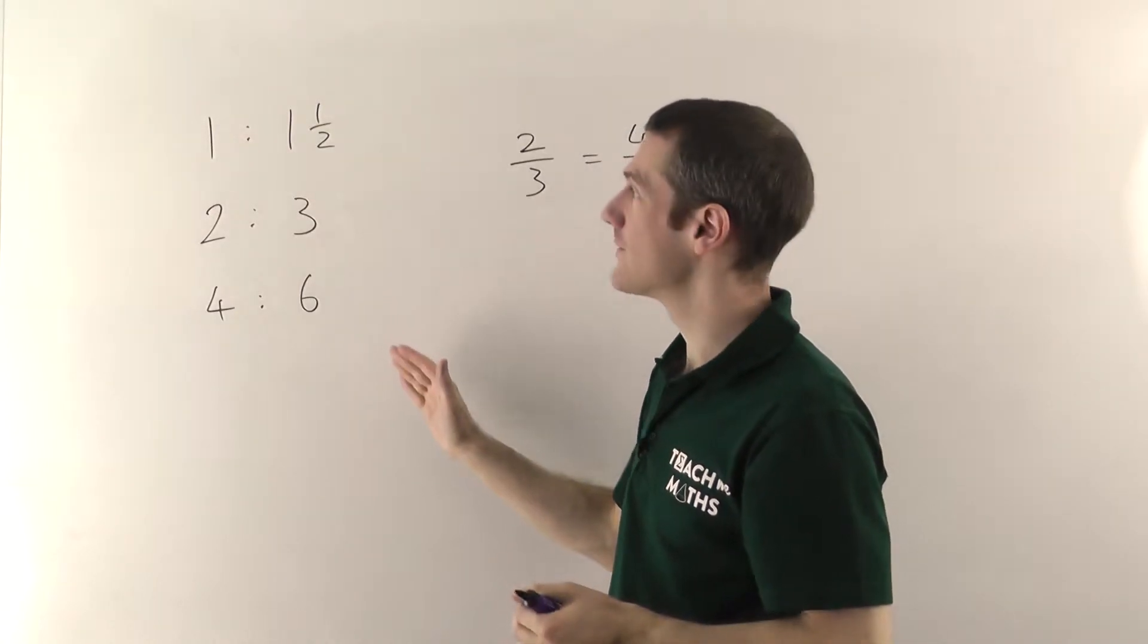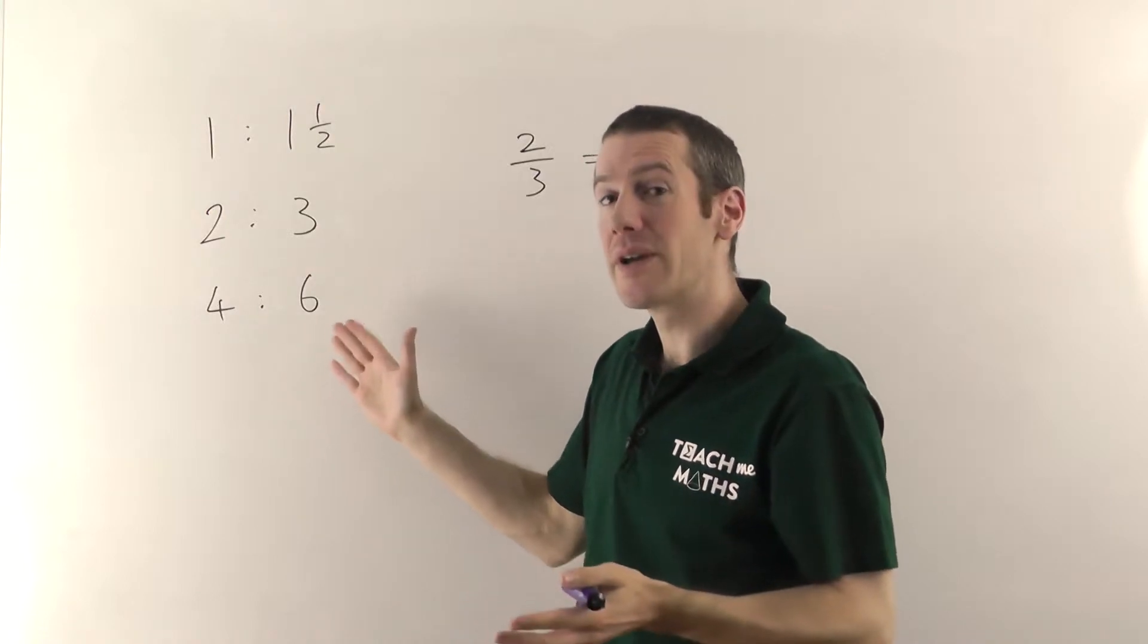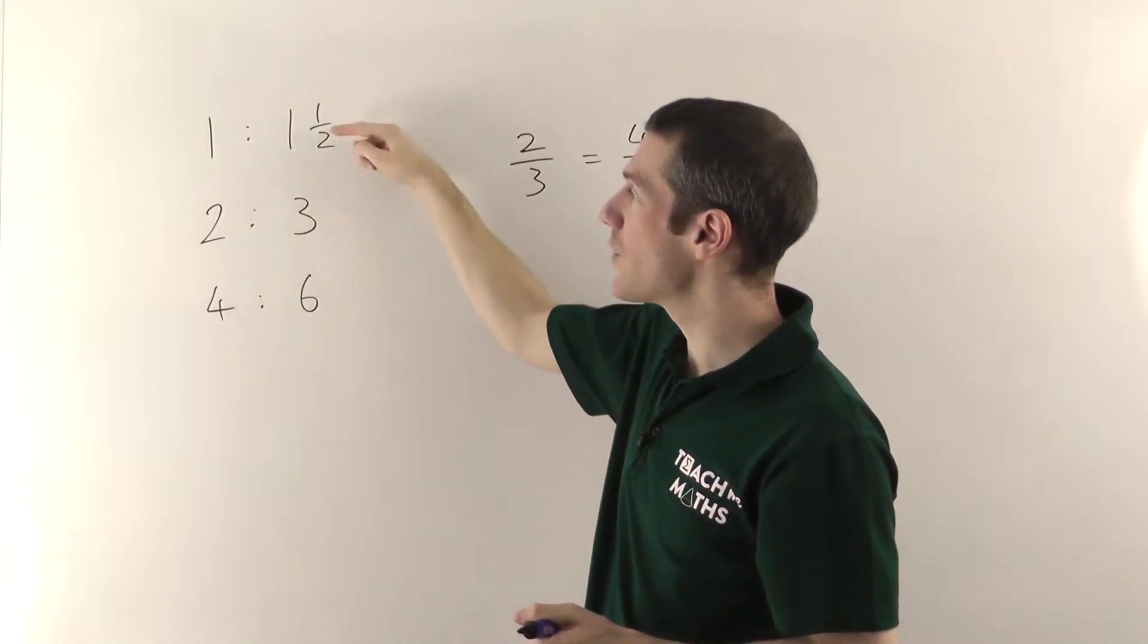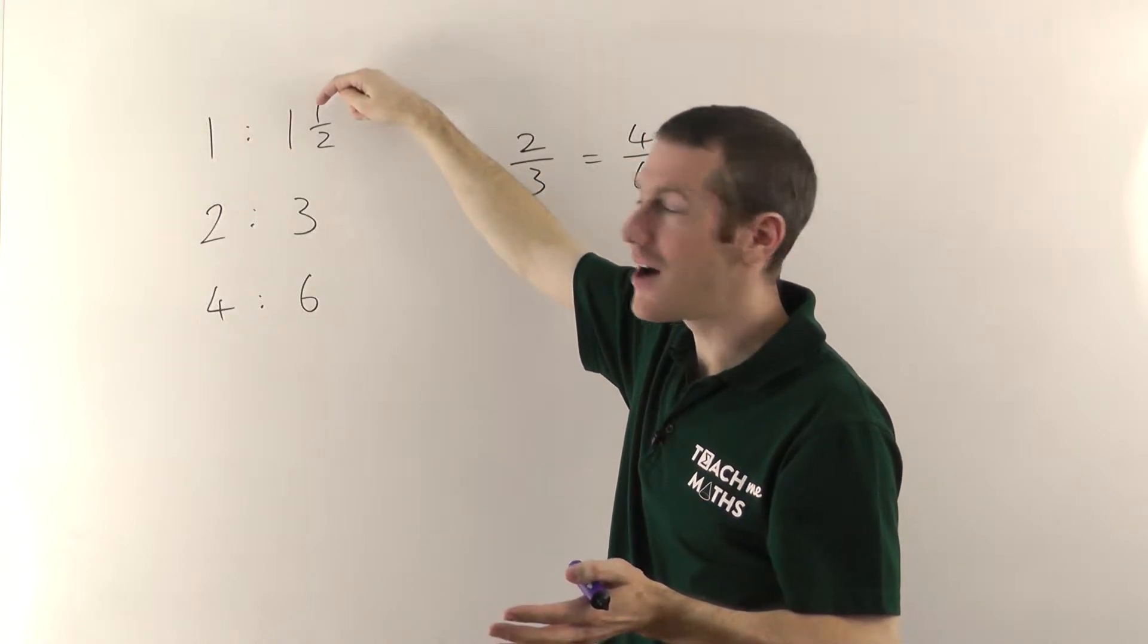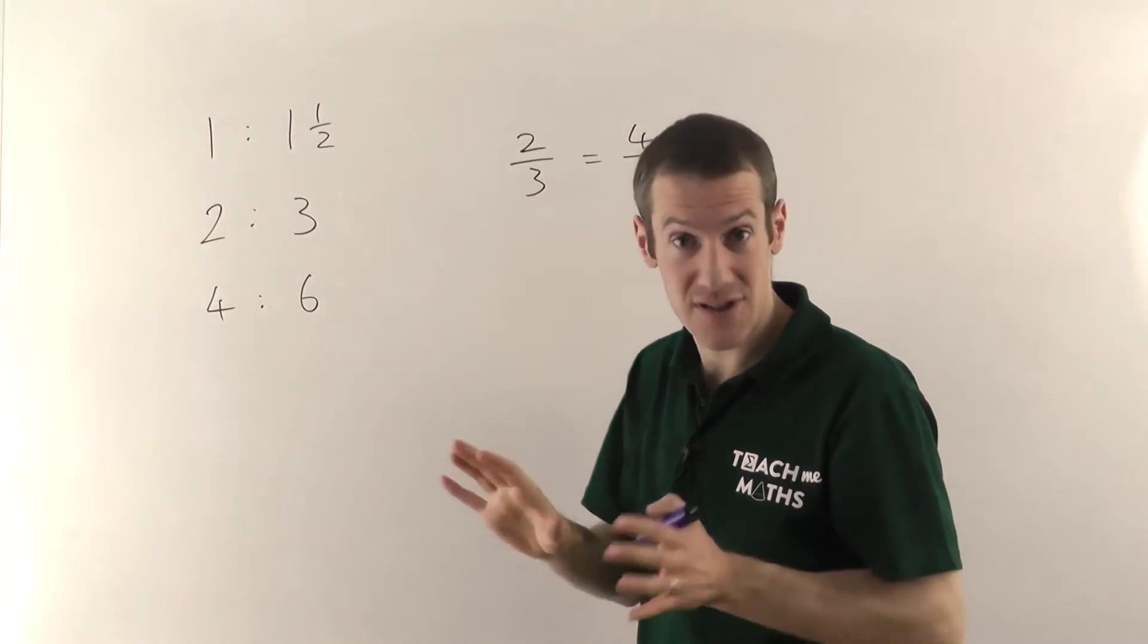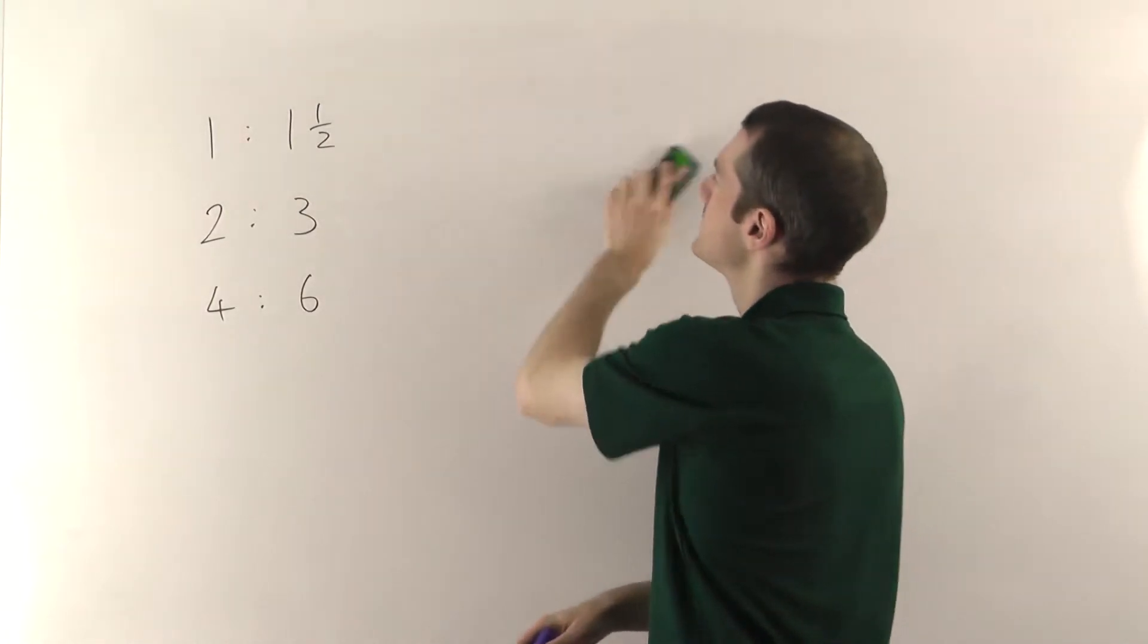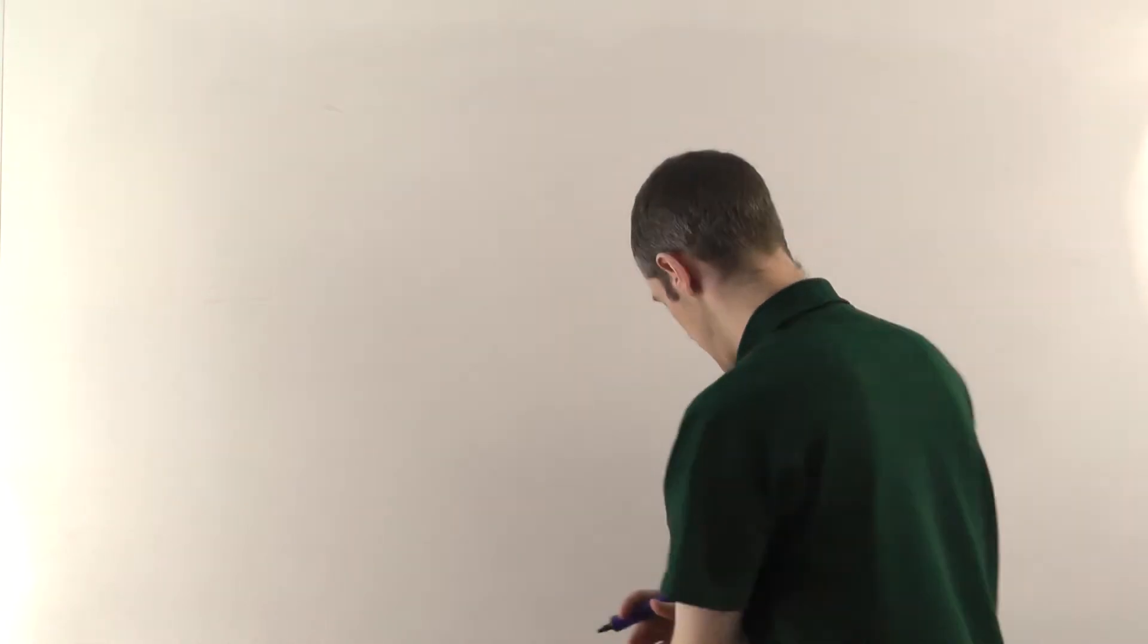For the simplified version you want the smallest numbers on either side while still being whole numbers. So if you've got four to six you can simplify this down to two to three by dividing both sides by two. You can't go any further because you don't want fractions or half numbers in a ratio. You do need to have whole numbers on both sides in the simplified form. So that's the general overview. I'll just do a couple of quick simplifying examples but it's very simple really if you know how to simplify fractions. There's not much difference.